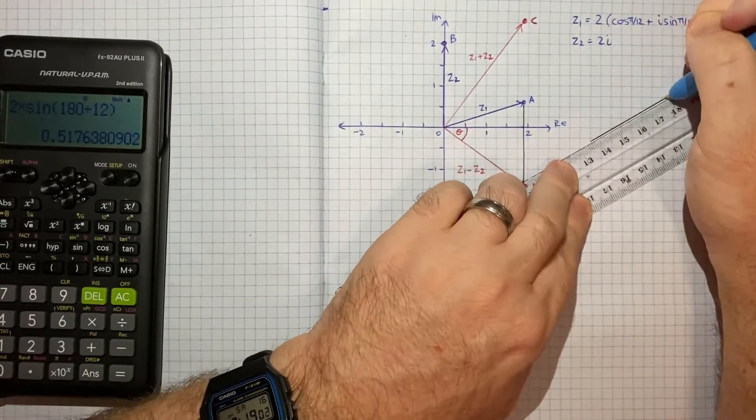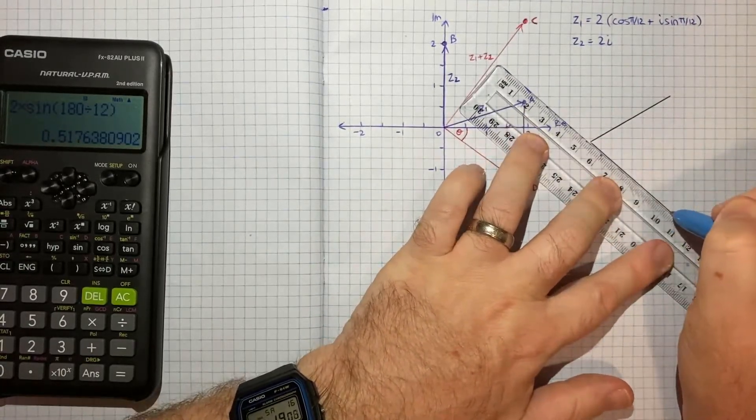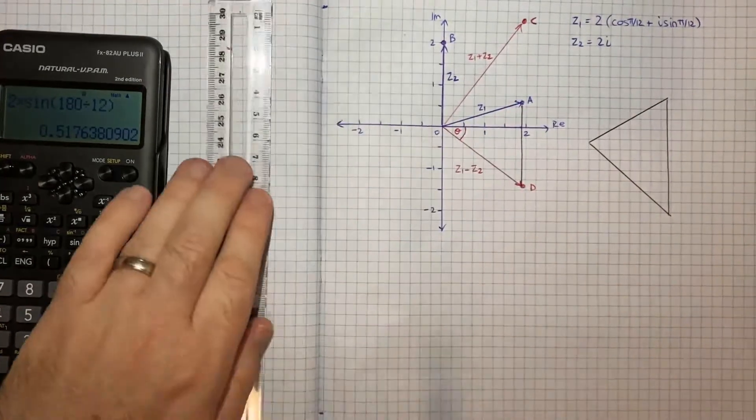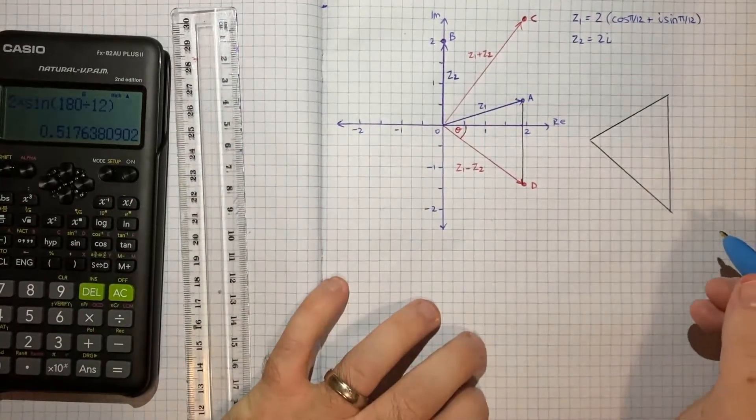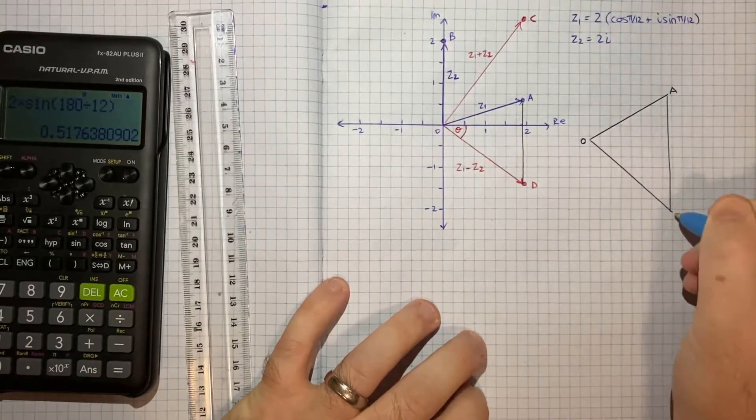This side isn't really necessarily to scale, but basically we've got our triangle O, A, and D.